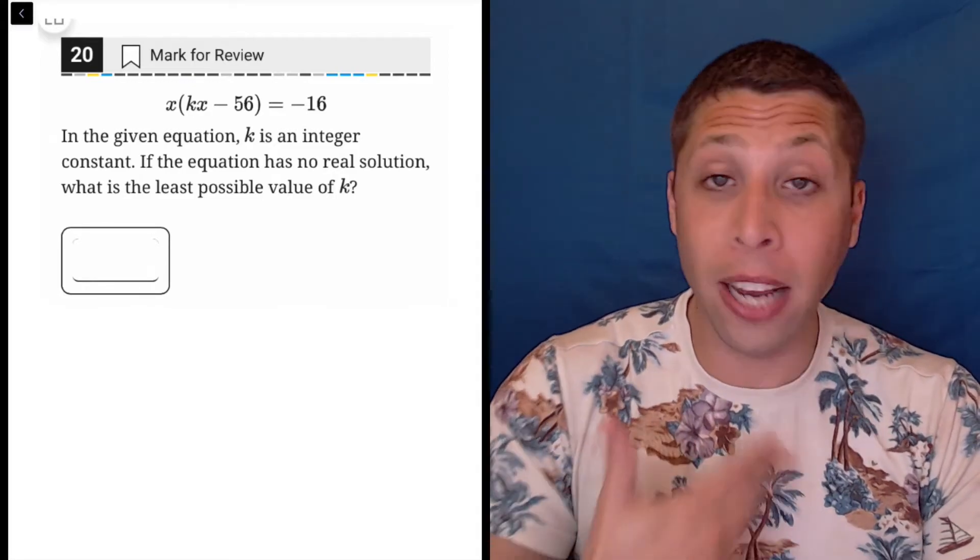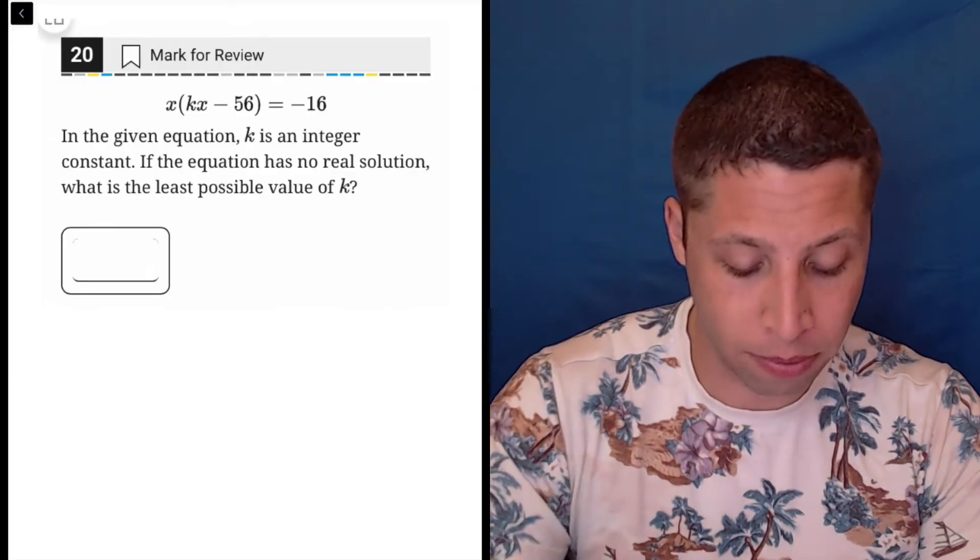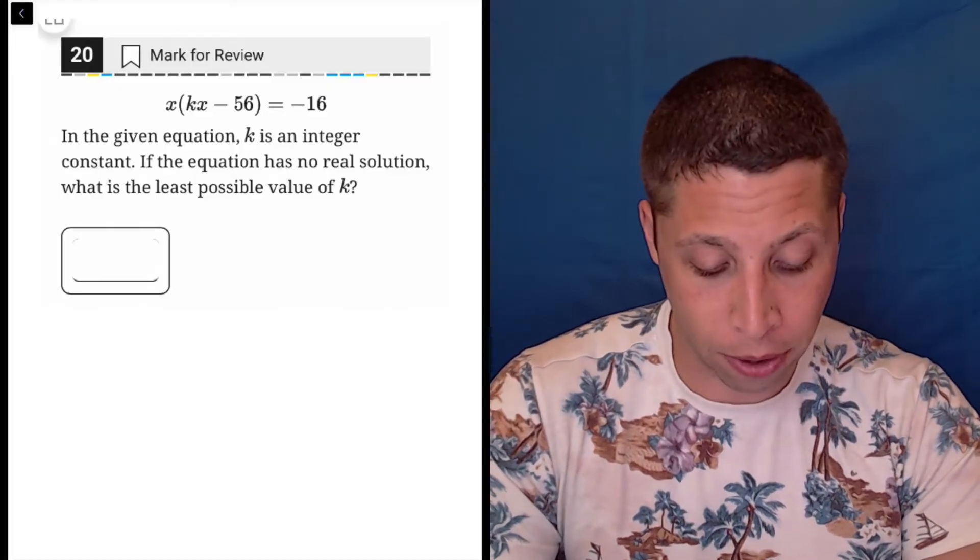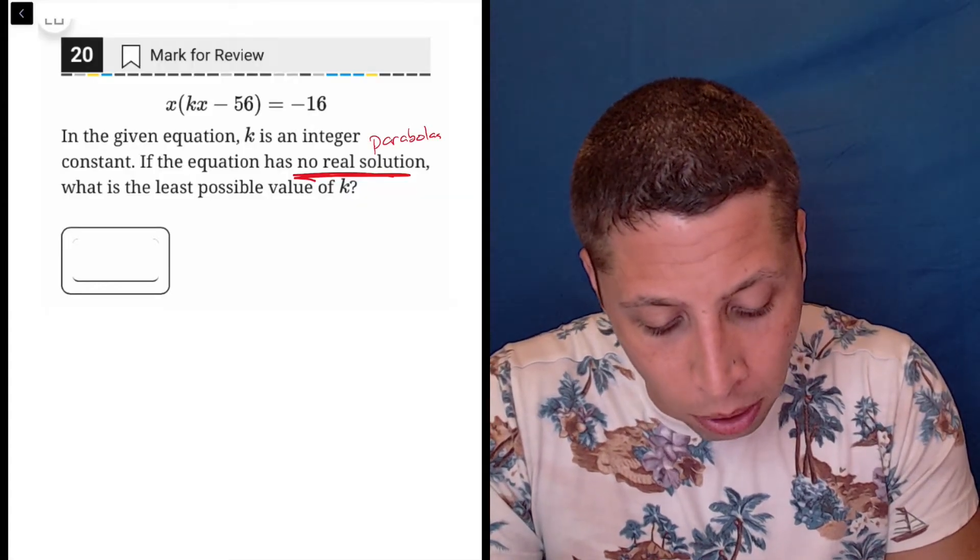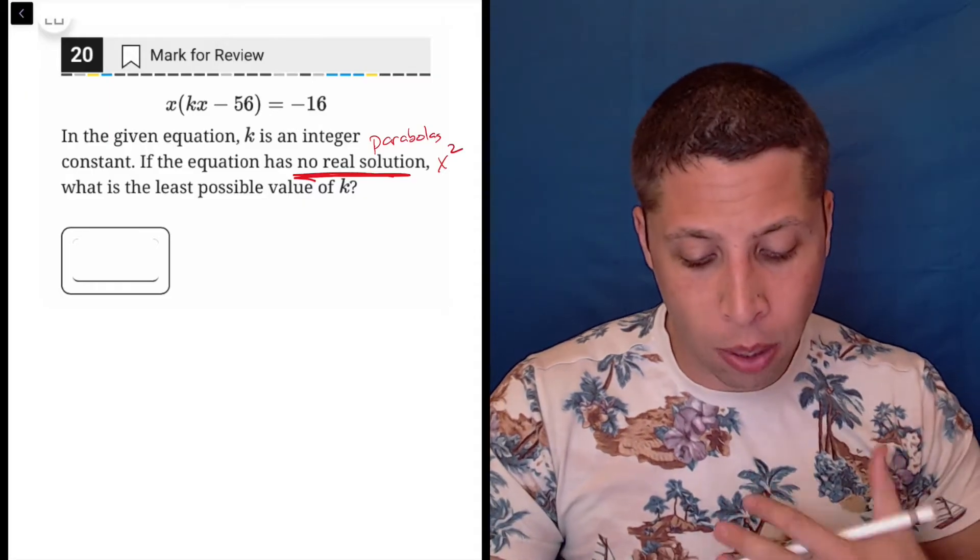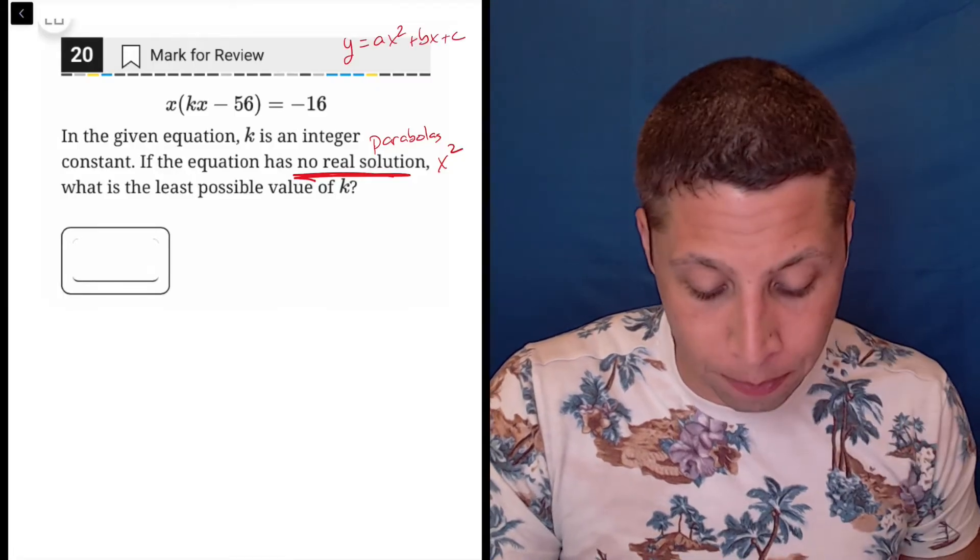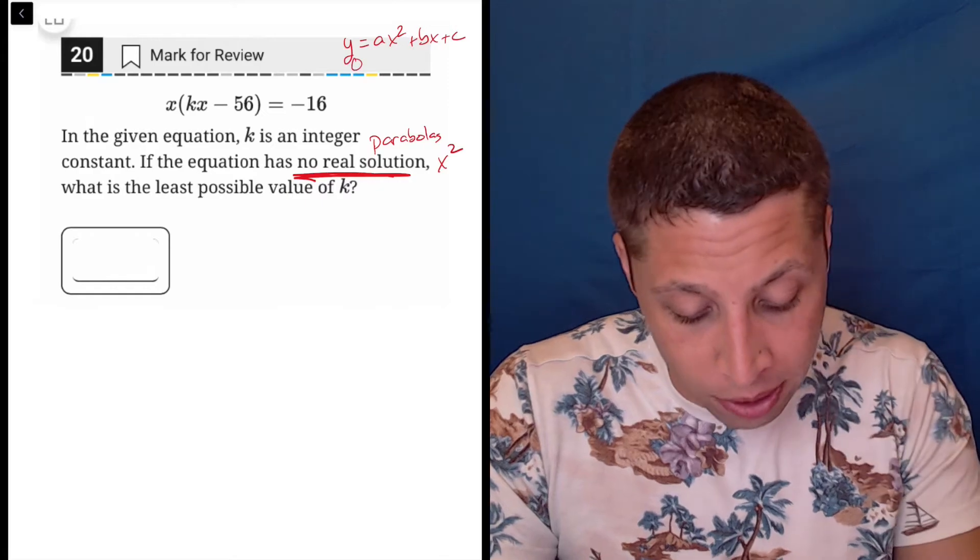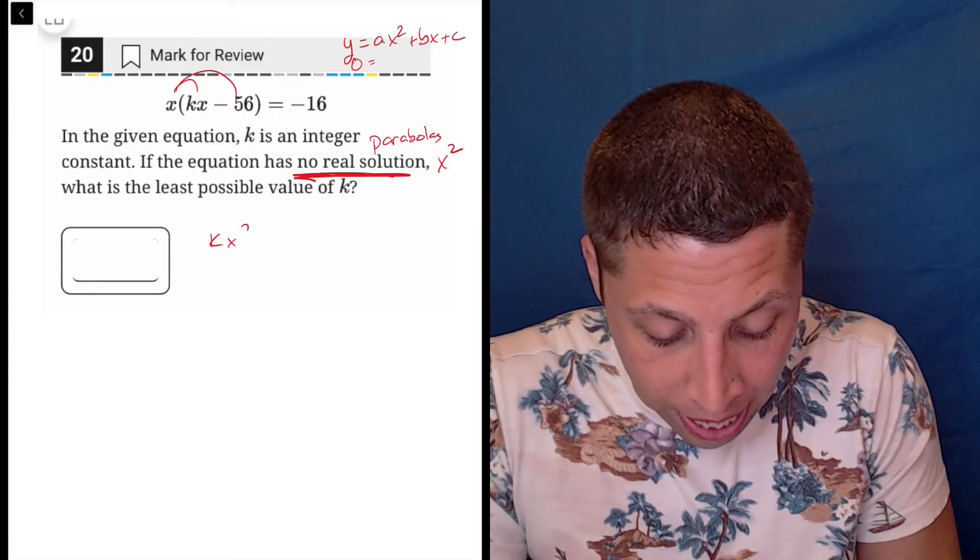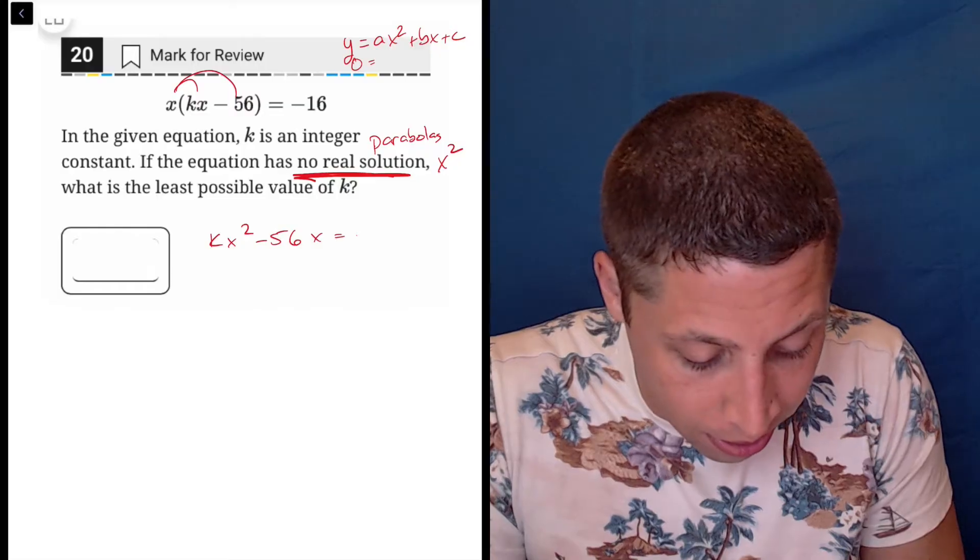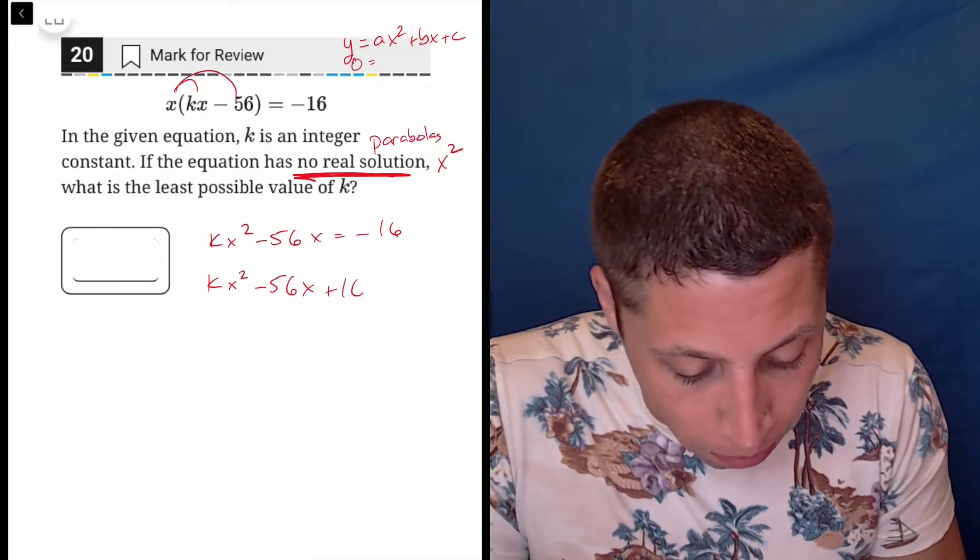There might be some other clever solution with the calculator, but let's just do it the more traditional way here first. When we're talking about solutions and specifically talking about parabolas or x squared situations, we want to get back into standard form: y equals ax squared plus bx plus c. So let's start by distributing this in. You're going to get kx squared minus 56x equals negative 16. I'm going to add the 16 to both sides, so kx squared minus 56x plus 16 equals zero.